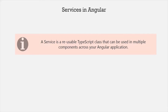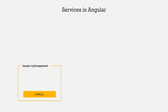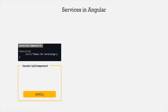Let's understand this with a simple example. Let's say we have a web application with a component called JavaScript component, which has an Enroll button. When a user clicks on this Enroll button, I want to show an alert message saying 'thank you for enrolling for JavaScript course.' For that, we will have to write the logic of displaying this alert window in the TypeScript class of this JavaScript component. So here we have this method OnEnroll, and when a user clicks on the Enroll button, it will call this OnEnroll method and display the alert message 'thank you for enrolling.'